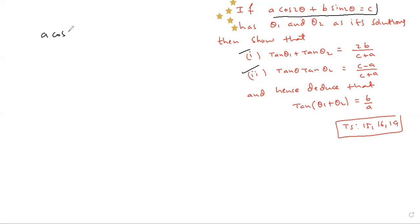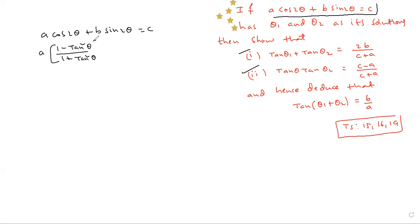Take the given expression: a·cos 2θ + b·sin 2θ = c. Now, a times cos 2θ — the formula in terms of tan is (1 − tan²θ) / (1 + tan²θ). The sin 2θ formula is 2 sin θ cos θ, and using the tan identity it becomes 2 tan θ / (1 + tan²θ). We are using basic rules from the trigonometric equations chapter.